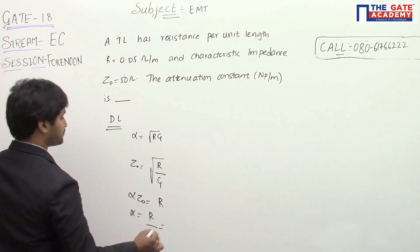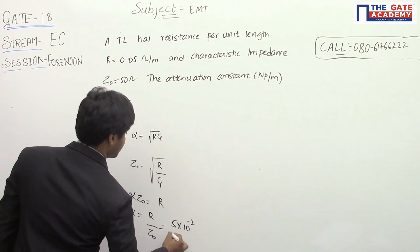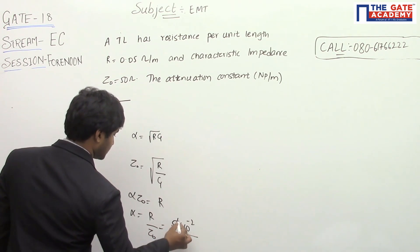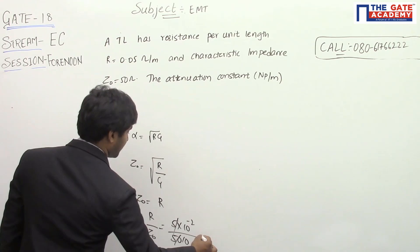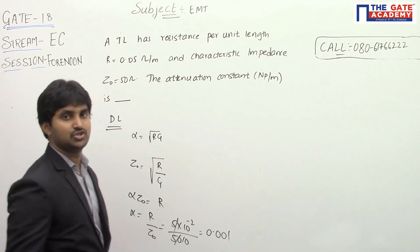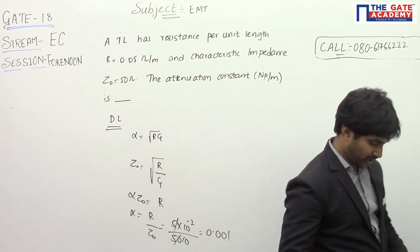R is 0.05, so 5 times 10 power minus 2 divided by the characteristic impedance of 50. This is 10 times, so 10 power minus 3, which is 0.001. The answer for this question is 0.001. Thank you.